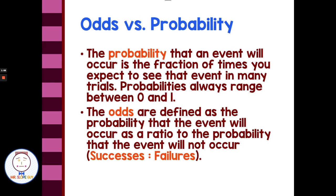Don't get probability confused with odds. Probability is always a range between 0 and 1 — the fraction of times you expect to see that event in many trials. Odds are defined as the probability the event will occur as a ratio to the probability it will not occur — successes as a ratio to failures — where probability is successes compared to all possible outcomes.